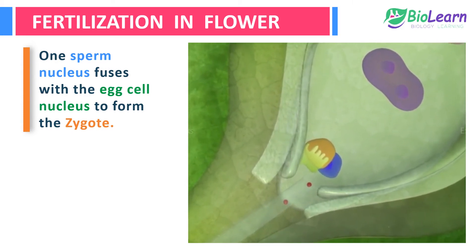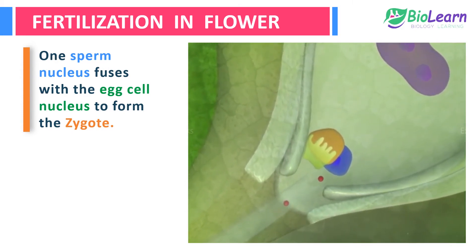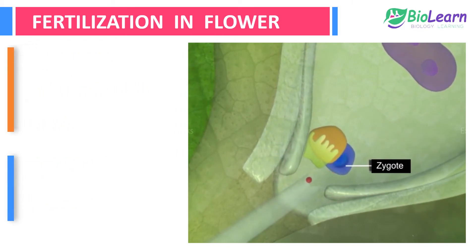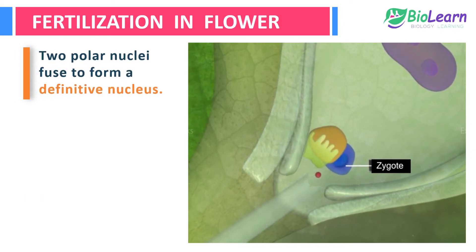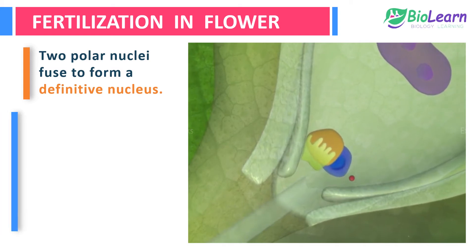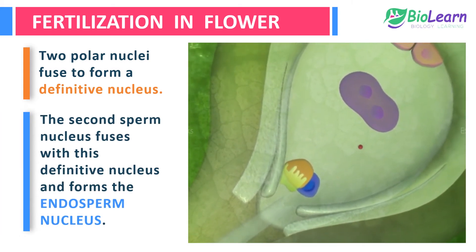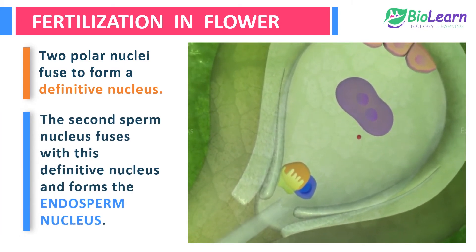One sperm nucleus fuses with the egg cell nucleus to form the zygote. This is called true fertilization or syngamy. Meanwhile, the two polar nuclei fuse to form a definitive nucleus. The second sperm nucleus moves further and fuses with this definitive nucleus to form the endosperm nucleus.